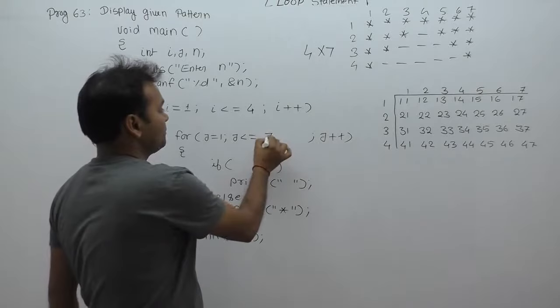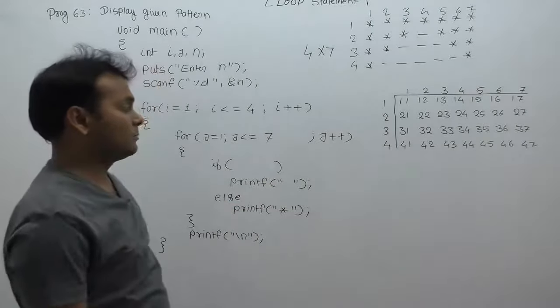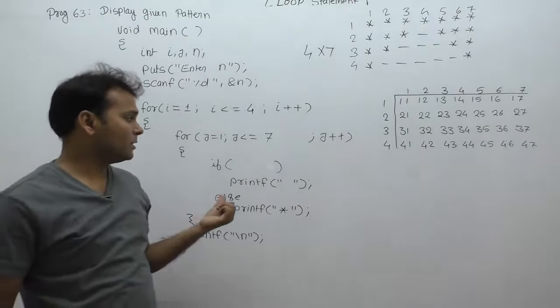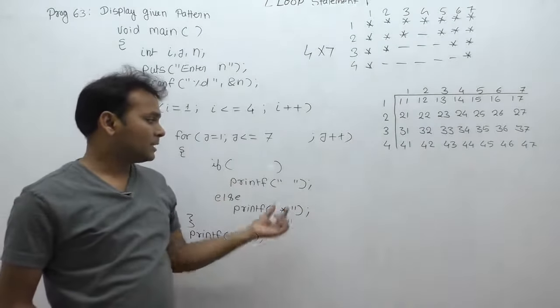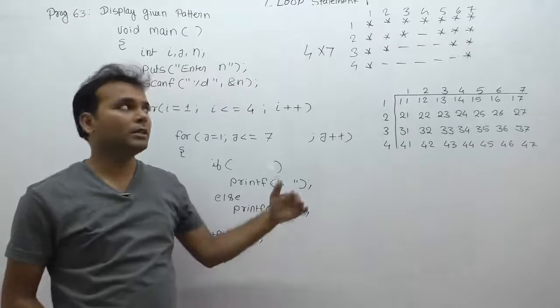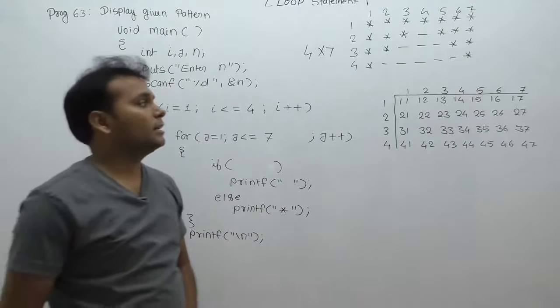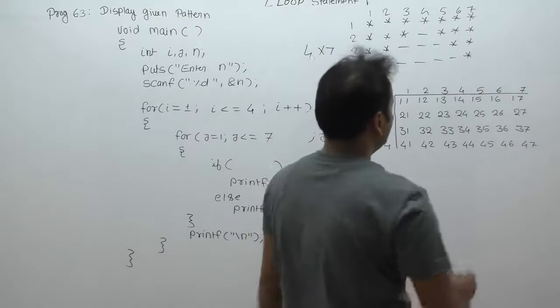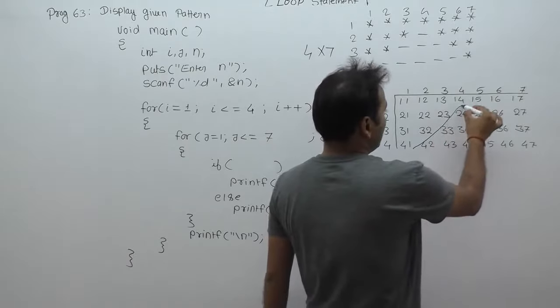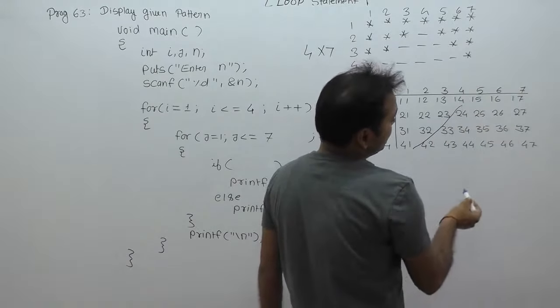Next, identify the if condition. Because in the inner loop, in many places we display space, in other places we display star, based on if conditions. Finally, we can calculate with respect to number of spaces. It's not necessary that the condition always calculates spaces.